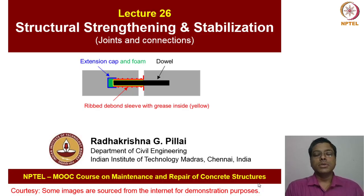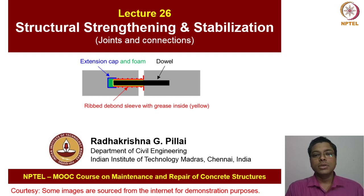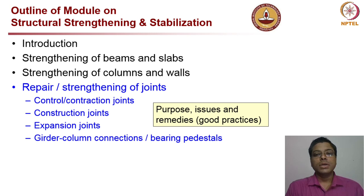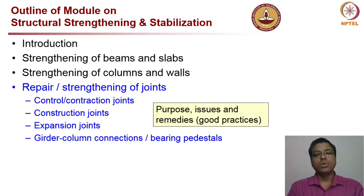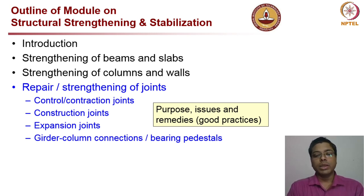Welcome to this lecture on joints and connections, which is part of the module on structural strengthening and stabilization. Here we will look at the purpose, the issues faced, and good practices of various types of joints — specifically control and contraction joints, construction joints, expansion joints, and the connection between girders and columns, including bearing pedestals and how we can repair them.